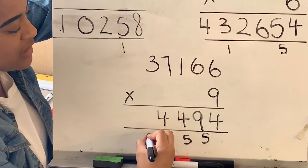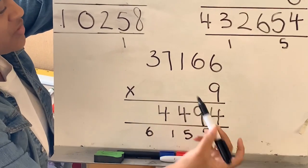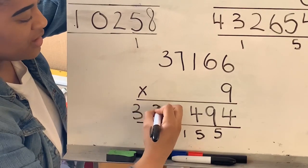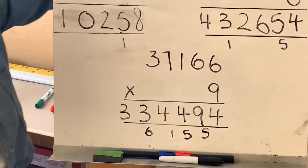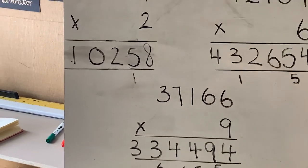Putting the 4 down, exchanging the 6 into the next column. 9 times 3 is 27, adding the 6 is 33. Putting it in the right column, and the answer is 334,494.